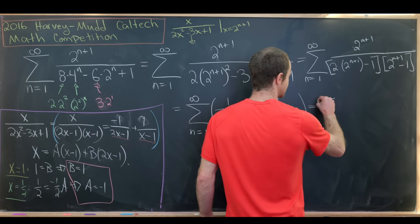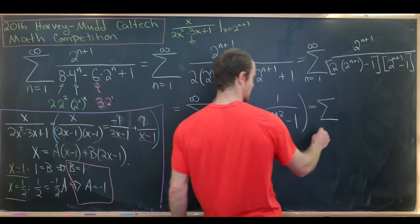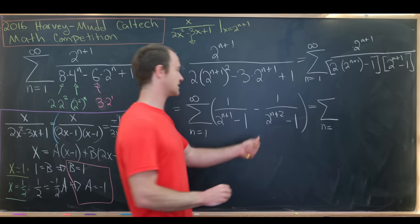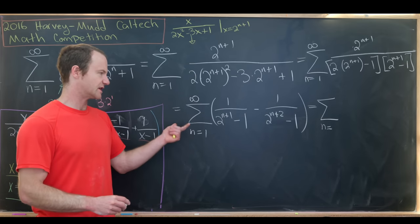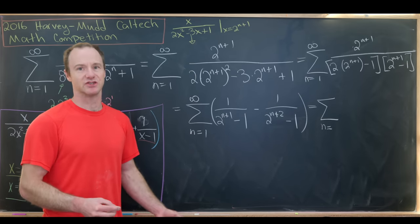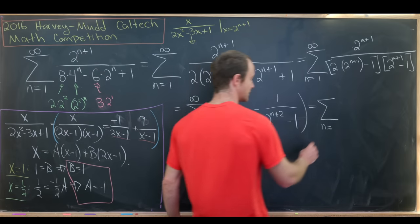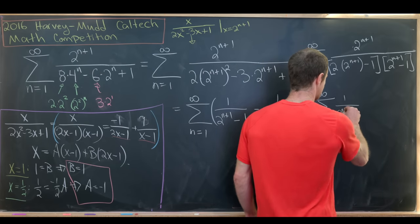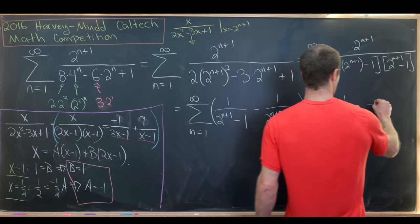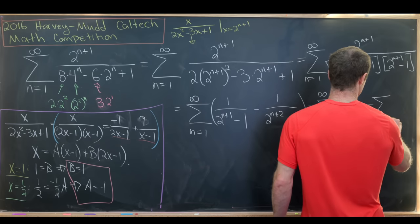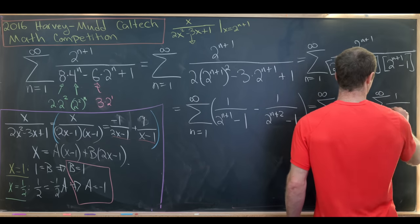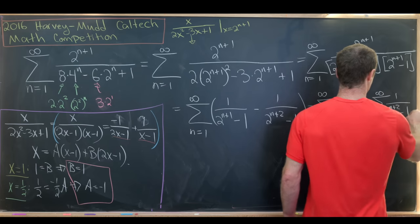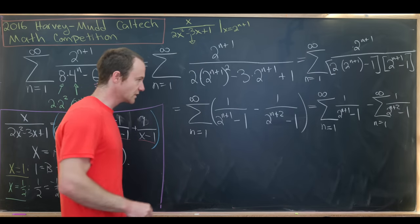So let's bring out the first term from this first term. Maybe before we do that, just to be super careful, let's split this sum into pieces. We know each of these converges absolutely because we could do a comparison test with like a geometric series or something. So we have the sum as n goes from 1 to infinity of 1 over (2^(n+1) - 1), and then minus the sum as n goes from 1 to infinity of 1 over (2^(n+2) - 1).